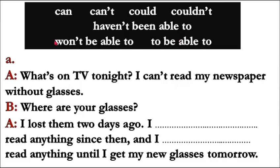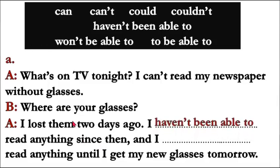Let's get started. 'What's on TV tonight? I can't read my newspaper without glasses.' 'Where are your glasses?' 'I lost them two days ago. I haven't been able to read anything since then' — because we have 'since' in the sentence, we use 'have been able to'. So: I haven't been able to read anything since then.